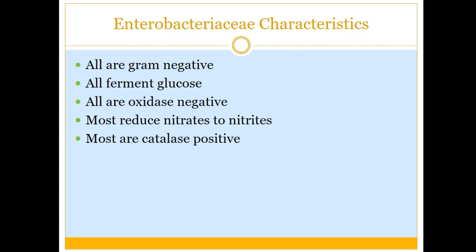In order to be considered part of the Enterobacteriaceae group, you have to meet all five characteristics. They all must be gram-negative rods. They all must be able to ferment glucose — a lot of people confuse this with fermenting lactose, which is tested on MacConkey agar, but that's not the defining characteristic. They are all oxidase negative. Oxidase is a test we always run on gram-neg rods right away. They all are able to reduce nitrates to nitrites, and they are catalase positive.